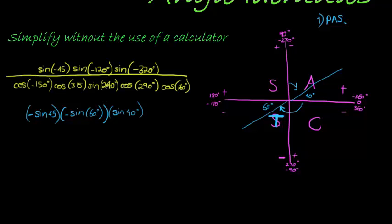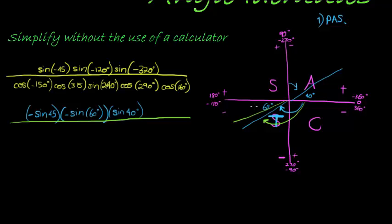That one's not a special angle, so I hope that gives you already an indication of what's about to follow. Now, cosine of negative 150 — negative 150 is also in the third quadrant. It's 30 degrees shy of negative 180, so the angle we're making with the x-axis is 30 degrees. Cosine is negative in the third quadrant, so this becomes negative cosine of 30 degrees.